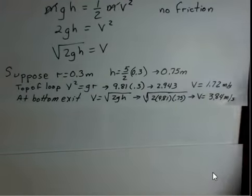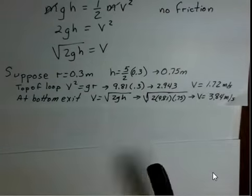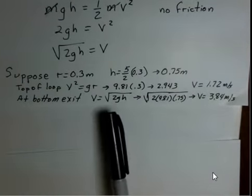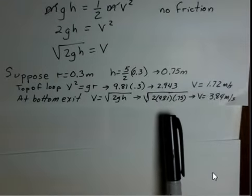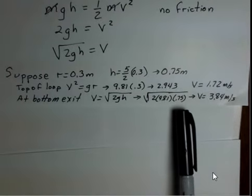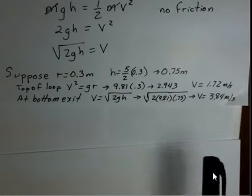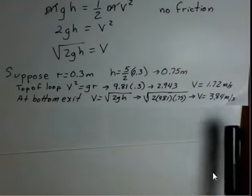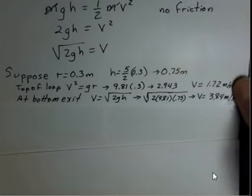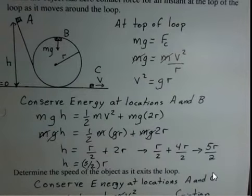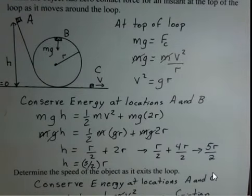I do that so I can compare to the velocity at the exit. At the exit, just using conservation of energy, square root of 2gh, 2 times 9.81 times 0.75, multiply that together, then take a square root, we get 3.84. Is it correct that the speed of the object at point C, 3.84 meters per second, is larger than the speed of the object at point B, 1.72 meters per second? The answer is yes.